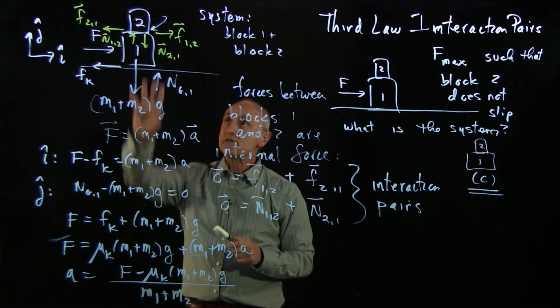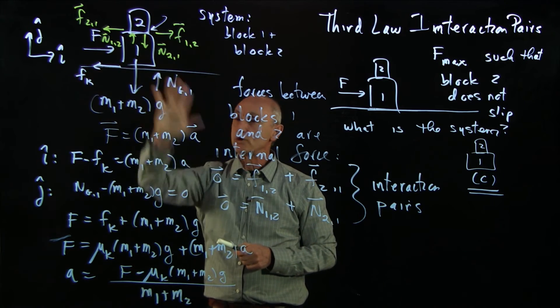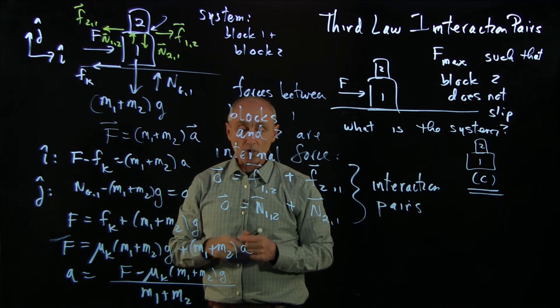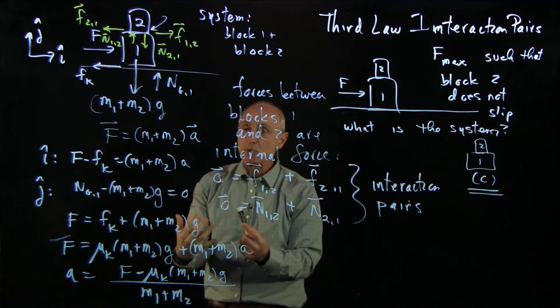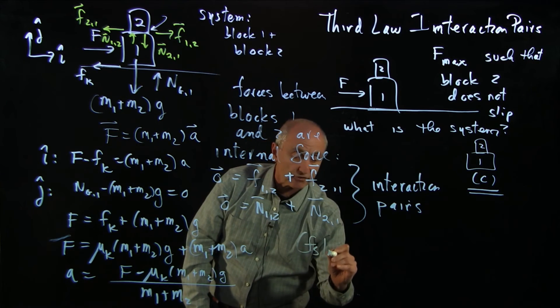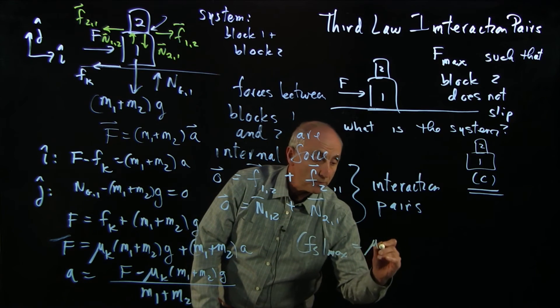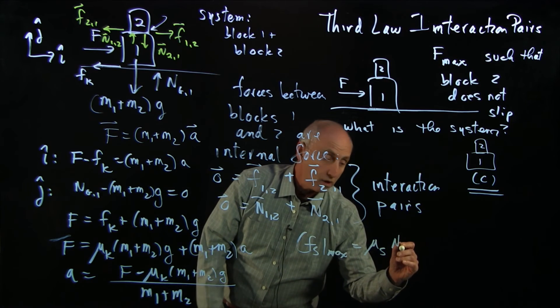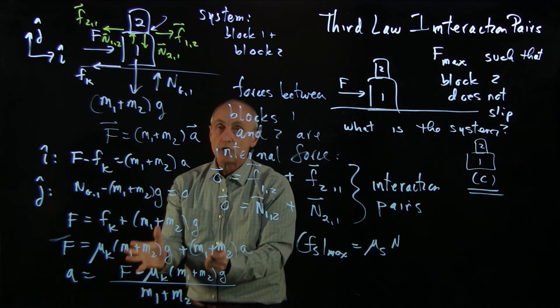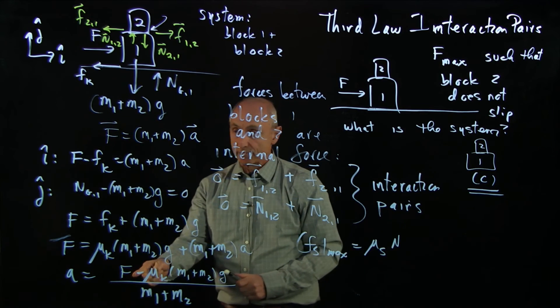because our static friction is an internal force in this system, it never shows up in Newton's second law. So we were never able to apply the condition that F static max was mu static and what we call the normal force between the blocks. And so we were unable to figure out what is the maximum force.